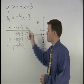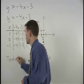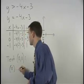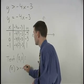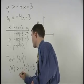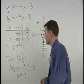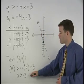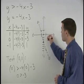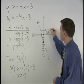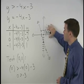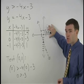So plugging 0, 0 back into the original inequality, we have 0 is greater than negative 4 times 0 minus 3, or 0 is greater than negative 3. Since 0 is greater than negative 3 is a true statement, that means the point 0, 0 is part of the solution set. And in fact, all points on this side of the boundary line will also be part of the solution set.